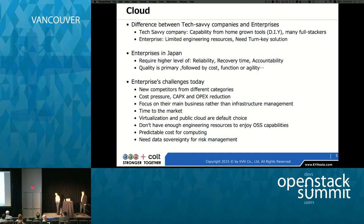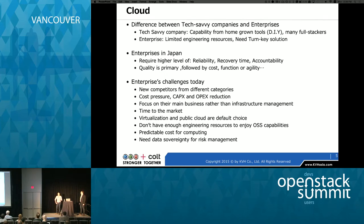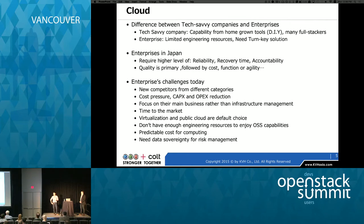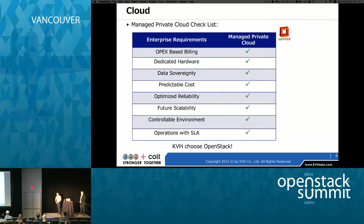Our target is enterprises. Enterprise is a bit different from tech-savvy companies — they don't have a lot of engineering resources to babysit their IT infrastructure, but they have a lot of pressure from the business side: CAPEX and OPEX reduction, time-to-market. As mentioned in this morning's keynote, virtualization and public cloud is the default choice for enterprises. The situation is getting more challenging every day, so service providers like KVH have to help those enterprises with our private cloud.